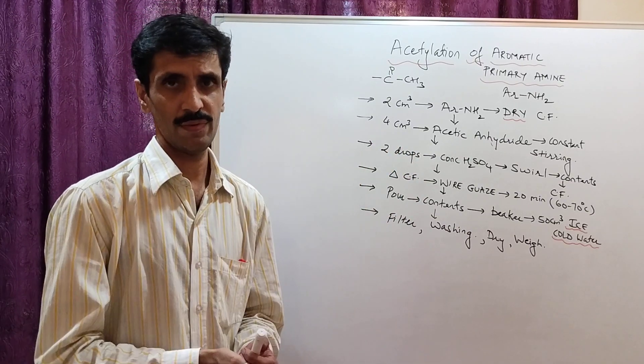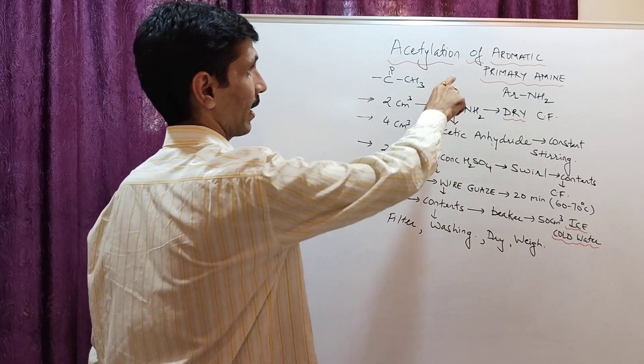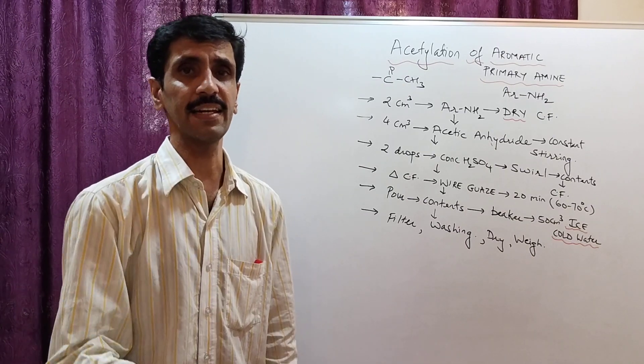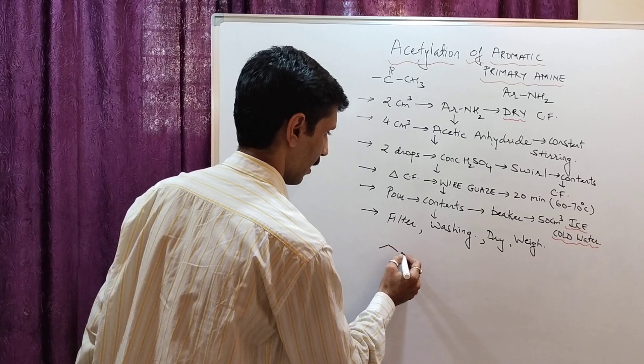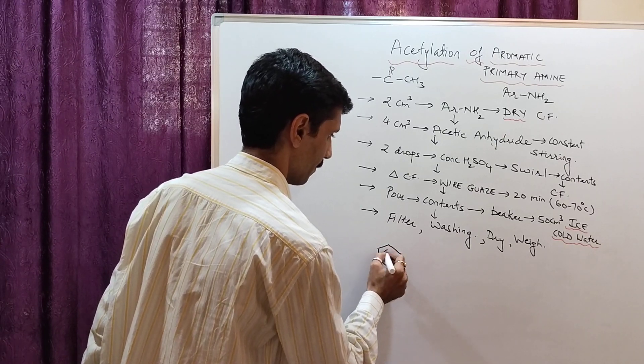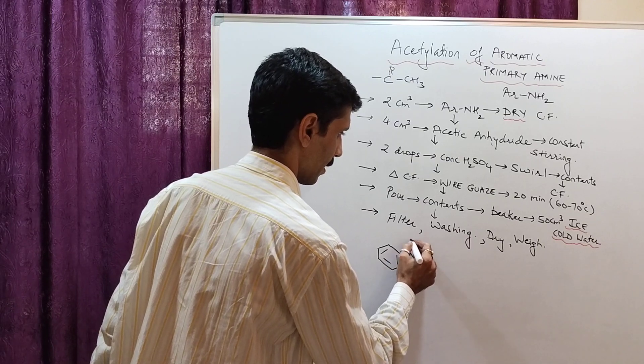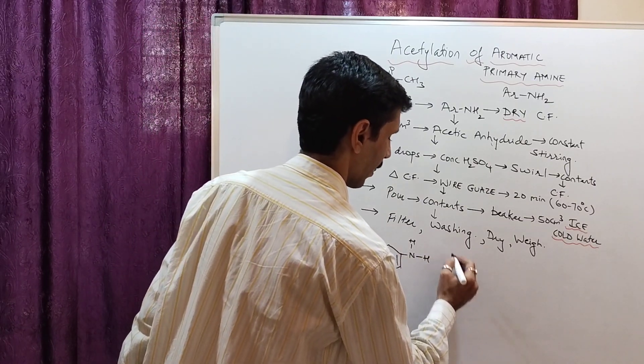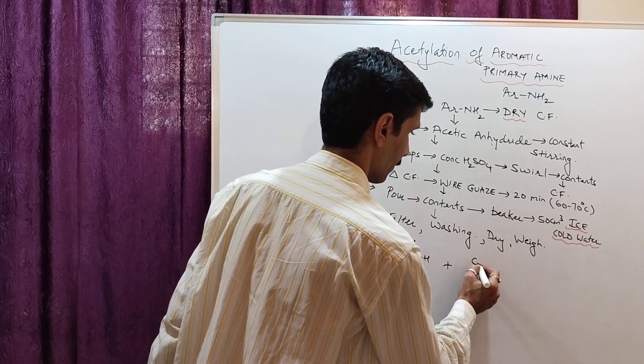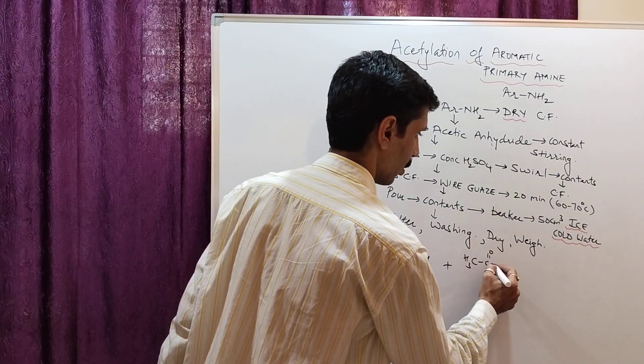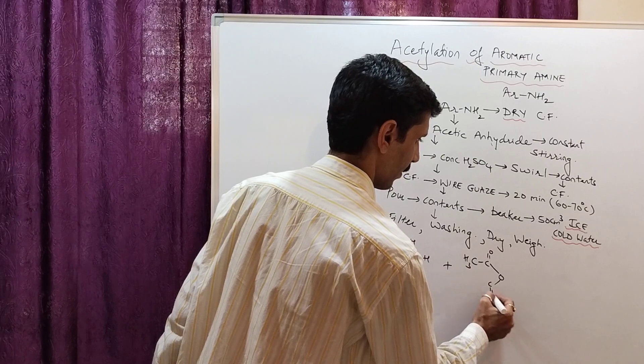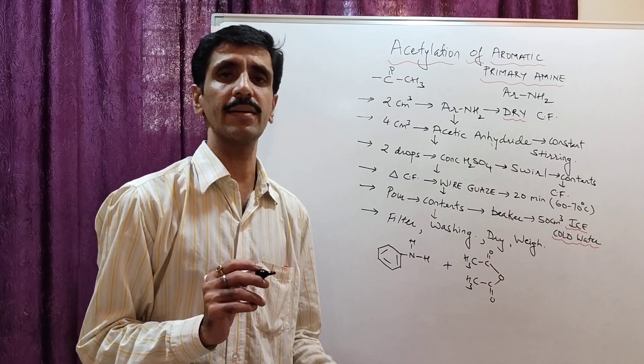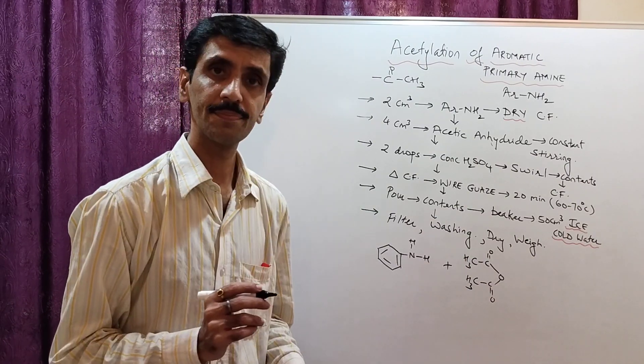Now the reaction. How the reaction takes place. We are going to take aromatic primary amine. The best example under this particular category is aniline. When you talk about aniline, Ar NH2, we are going to treat this with acetic anhydride. CH3 C double bond O, O, C double bond O, CH3. Simple is, you take two molecules of acetic acid, remove water molecule, you get acetic anhydride.